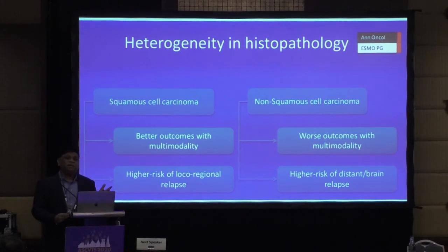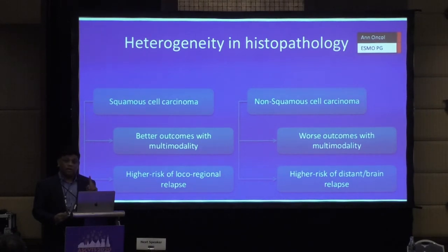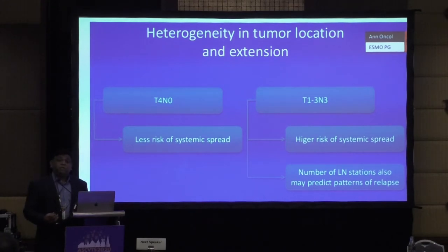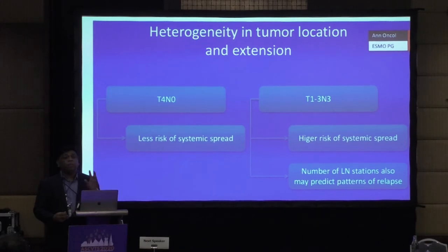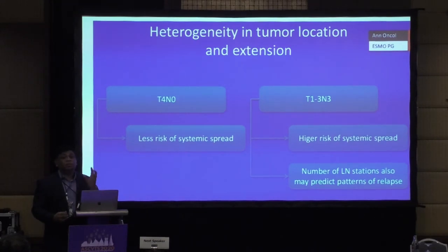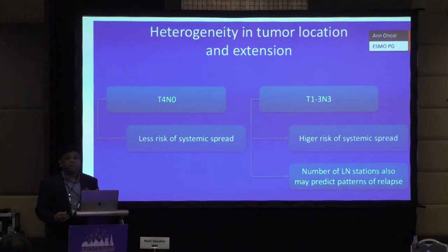For non-squamous with multimodality, outcomes may be slightly worse than squamous. But with immunotherapy in the equation, that may change. There's also heterogeneity in tumor location. T4 is still a stage 3 but locally invasive — the tumor biology shows no lymph nodes are lighting up, making it more of a local problem. Bianchi and others do SVC resection, brachial plexus resection, and achieve 63% five-year survival. But a T1 with N2 or N3 becomes a stage 3 that is a systemic disease — here you must consider what to do with the small primary.